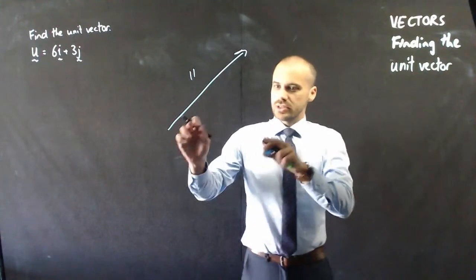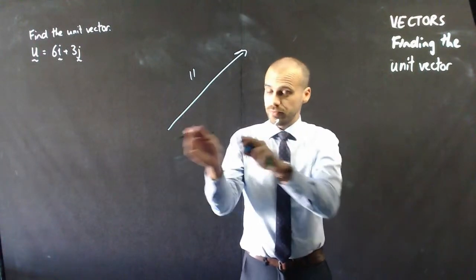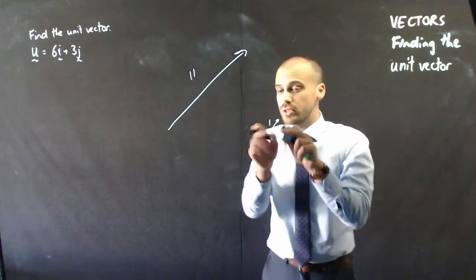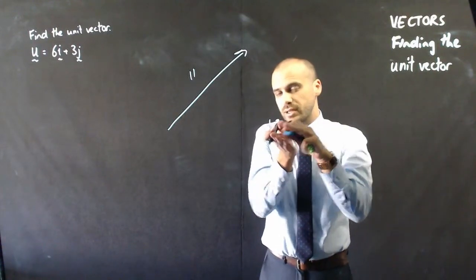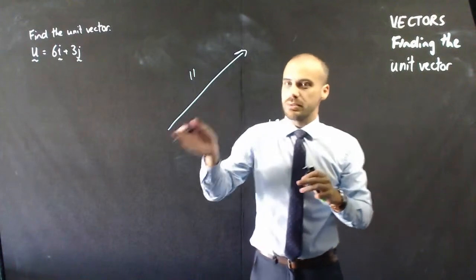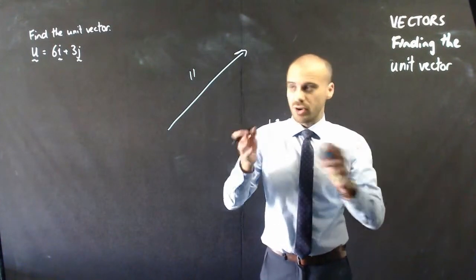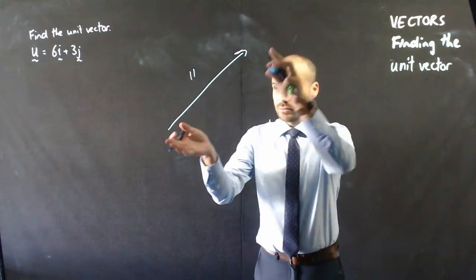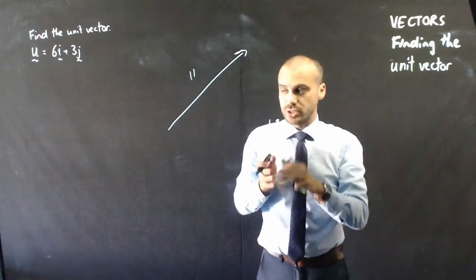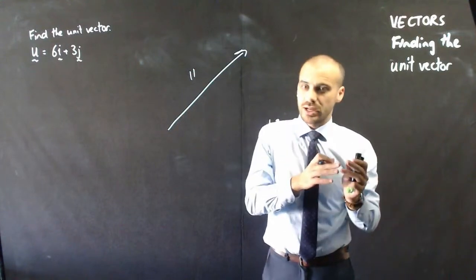Okay, so it's got the same direction, but this is the unit vector because we've scaled it right back. And if you want to scale something down, if something's 11 units long and you want to turn it into 1 unit long, you divide it by 11, divide it by its magnitude. So that's pretty much how we're going to get our unit vector.